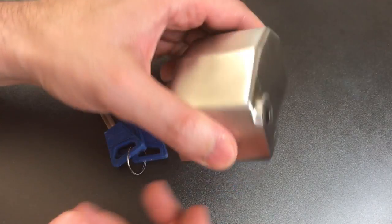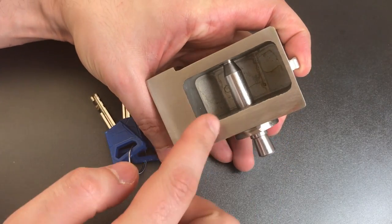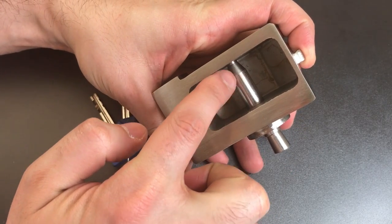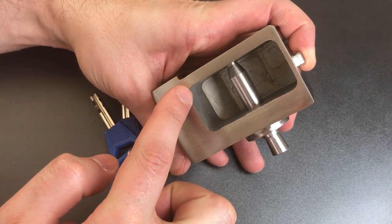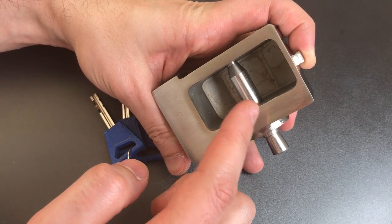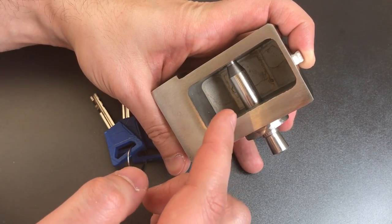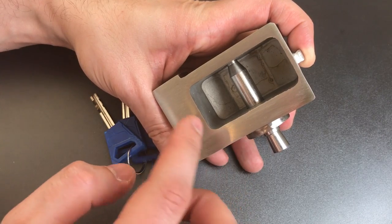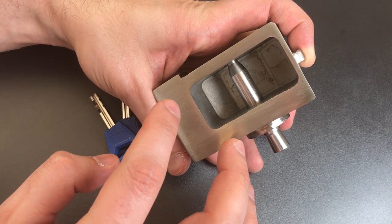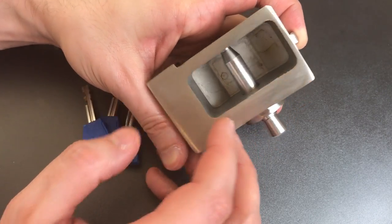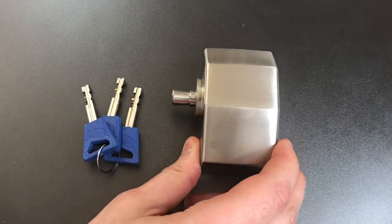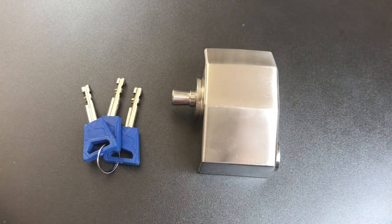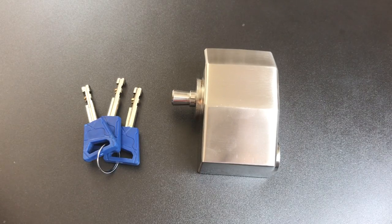This is a hidden shackle padlock, which means the shackle, the portion that engages with a chain or a hasp, is completely shrouded inside of the lock body. That means you can't get to it with bolt cutters or with a grinding wheel or a saw without completely obliterating the lock body itself. And on this particular lock, the lock body is pretty beefy. This is made out of 304 stainless steel, which means it's never going to rust on you.